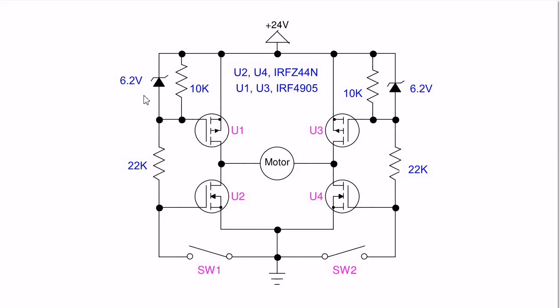By the way, the 6.2 volt zeners are to protect the gate circuit of U1 and U3 because I'm using more than 20 volts.